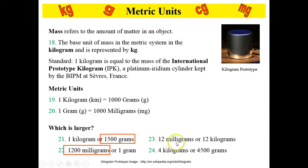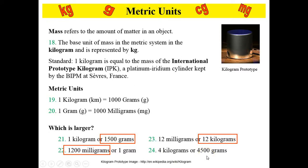Number 23: 12 milligrams or 12 kilograms? That one should be easy — 12 kilograms is much, much larger than 12 milligrams. And finally, number 24: 4 kilograms or 4,500 grams? That one's tricky. There are 1,000 grams in a kilogram; if we multiply by 4, we get 4,000. So 4,500 grams is the larger unit.